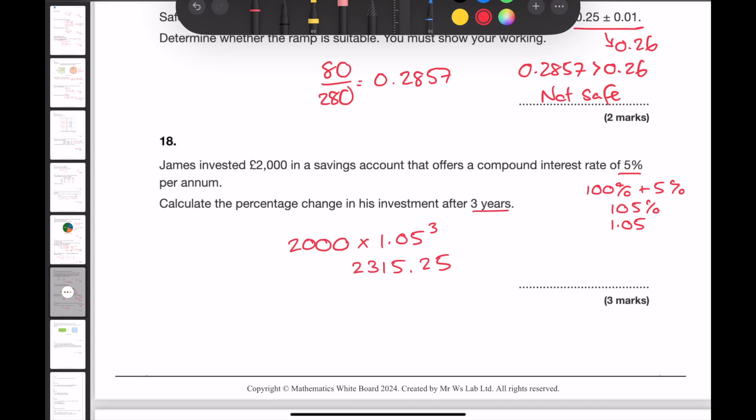To calculate a percentage change, you look at the change which is 315.25 and divide it by the original. Then times it by 100. This gives me 15.76 to two decimal places. So the answer is 15.76%. An alternative to this method would be to look at the decimal multiplier. 1.05 to the power of 3 gives me 1.157625. Notice how this part is exactly the same as our answer when we subtract 1 and times it by 100.